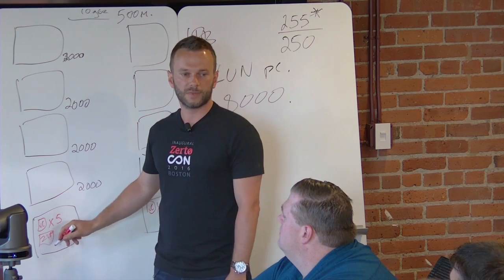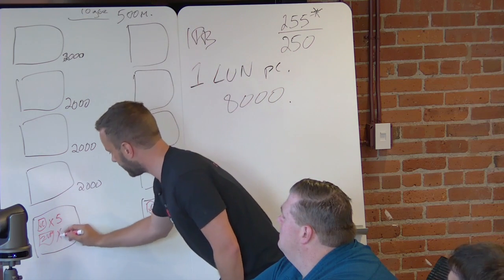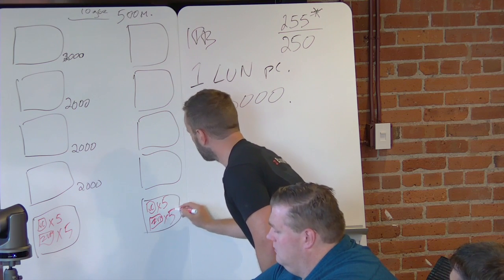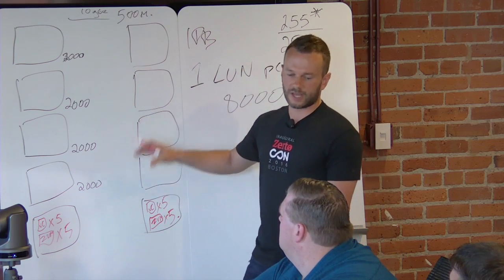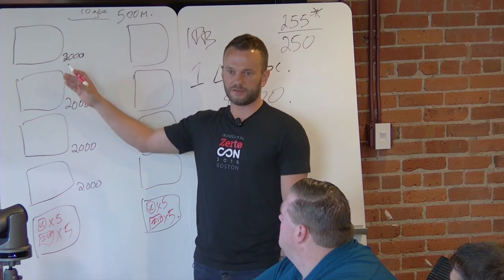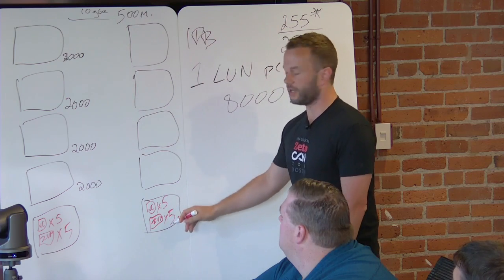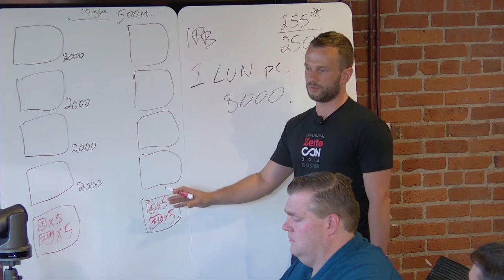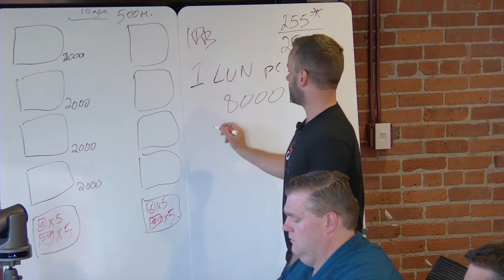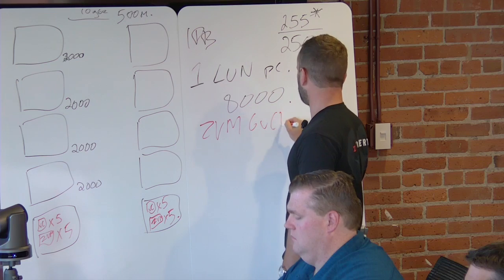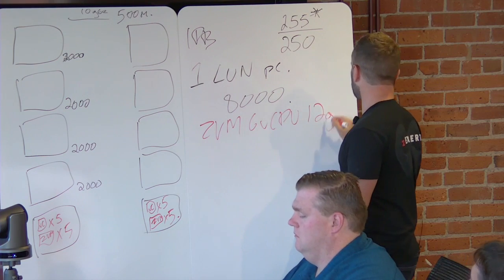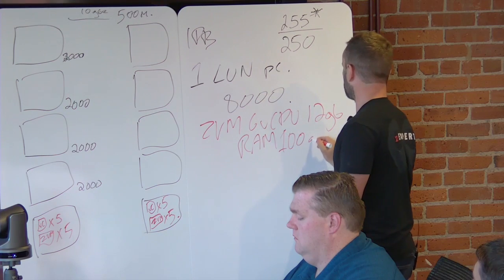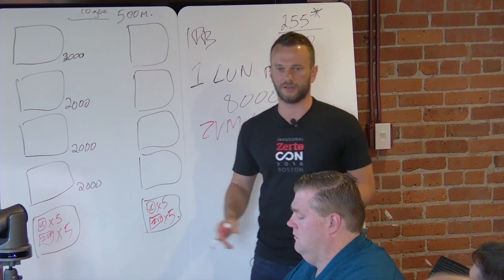Zerto has a Zerto Virtual Manager — our central management interface — that gives you one place to log in to initiate, manage, and recover, and it plugs into vCenter to orchestrate and automate all operations. These are a one-to-one mapping: one ZVM per vCenter, so there are five ZVMs per site.